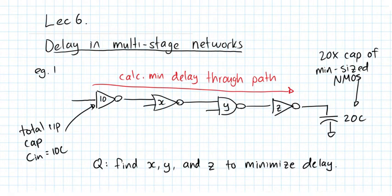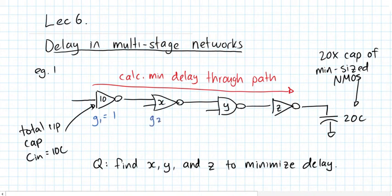We're going to use logical effort to our advantage here. It's a powerful way not only to compute the delay through arbitrary networks like this, but also to find the optimal sizing in terms of delay. The first thing we can do is write down the logical effort G terms for all gates: the logical effort of an inverter is 1, and the logical effort of a NOR gate is 5/3 — we can look this up or re-derive it.